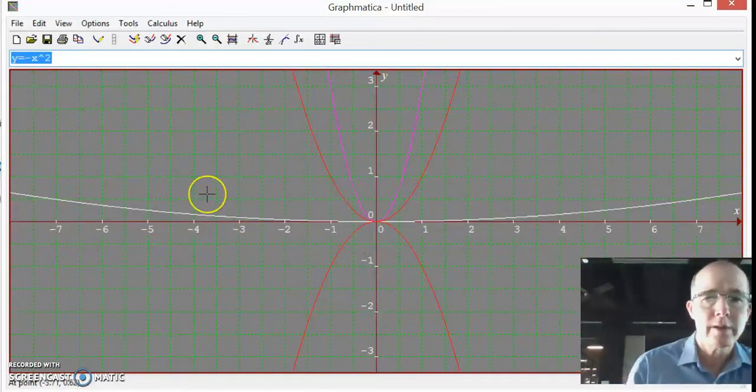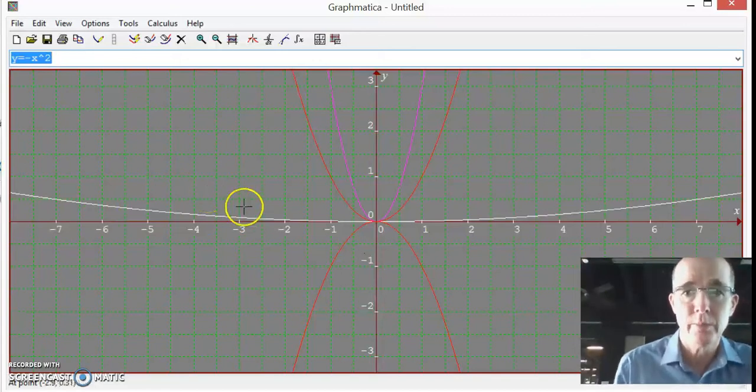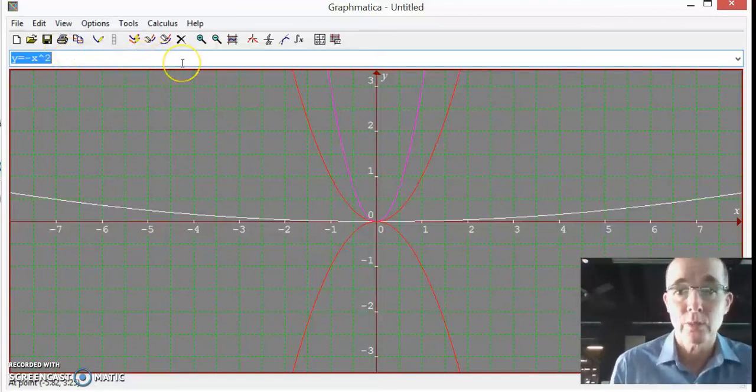So you can see there's a variety of ways of actually changing your standard x squared graph. You can put it in brackets and add or take things. You can just add or take things without the brackets, or you can put numbers in front of the x squared as the coefficient.